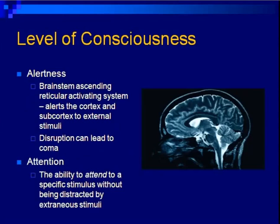Regarding level of consciousness: you have to be alert to be conscious. The part of the brain involved is the brainstem ascending reticular activating system, which alerts the cortex. If the cortex is not made alert, it cannot respond to any external or internal stimuli. Complete disruption results in a comatose patient. You must have alertness to be attentive, but the reverse is not true — a vegetative state individual can be awake but is not attentive to their surroundings, which requires cortical function.